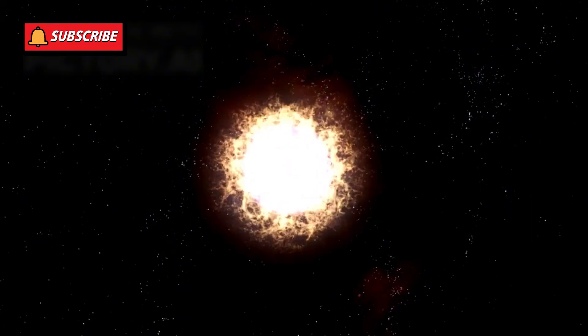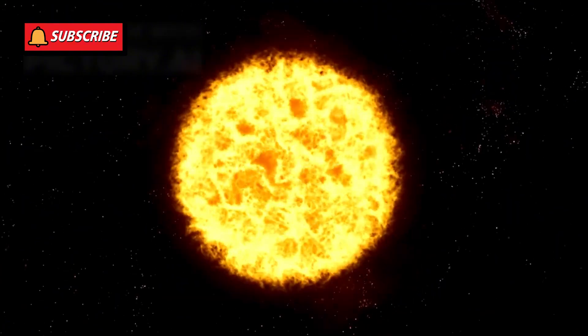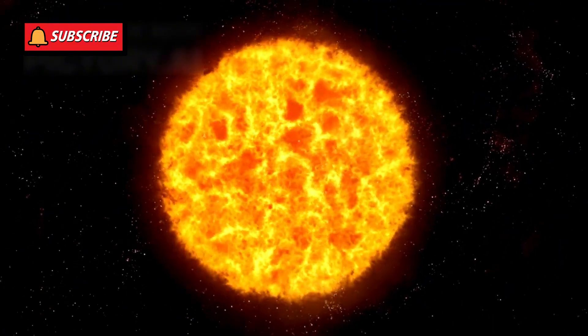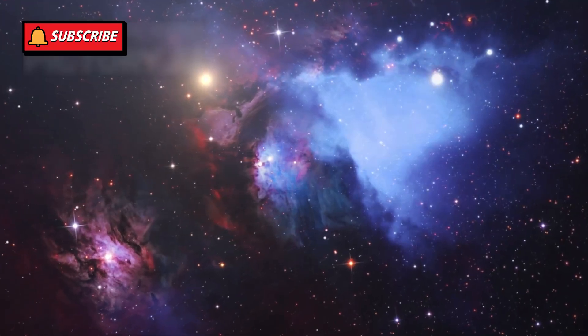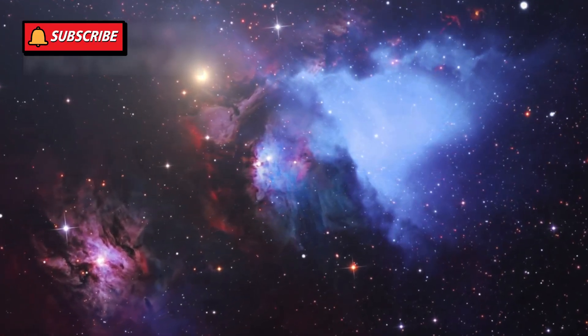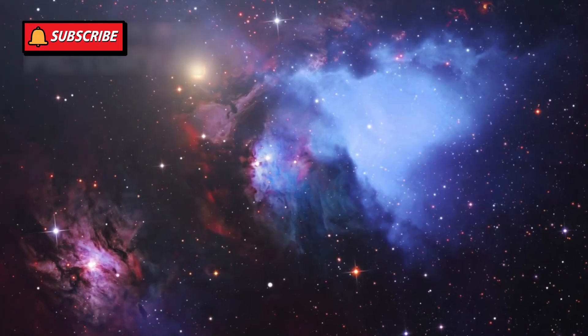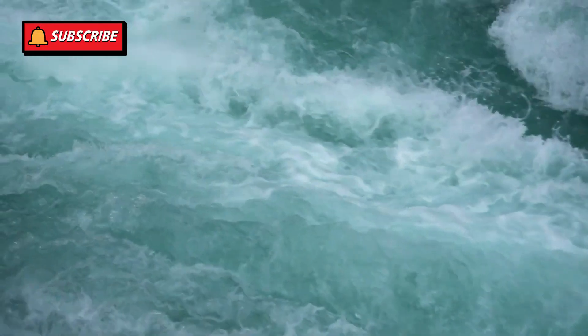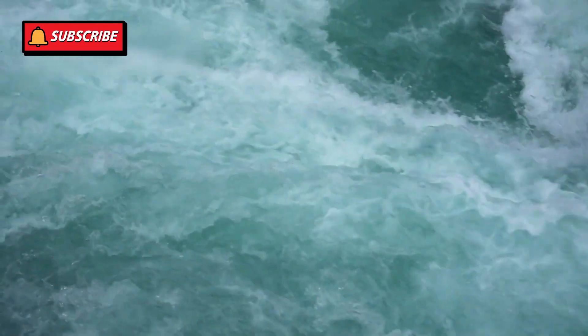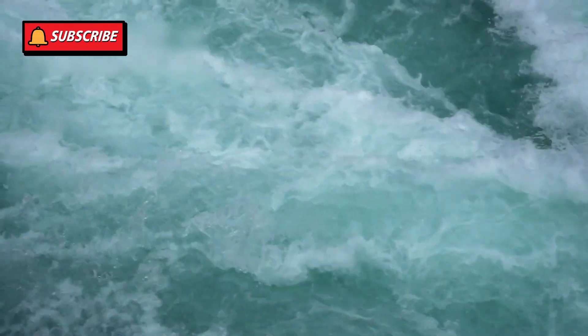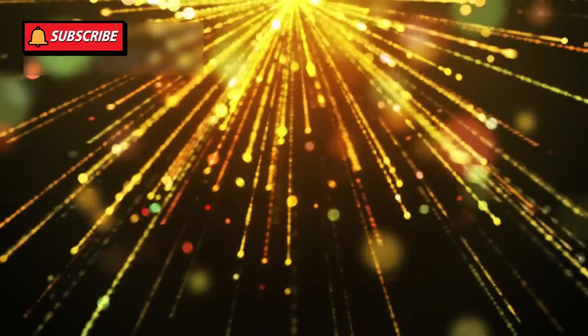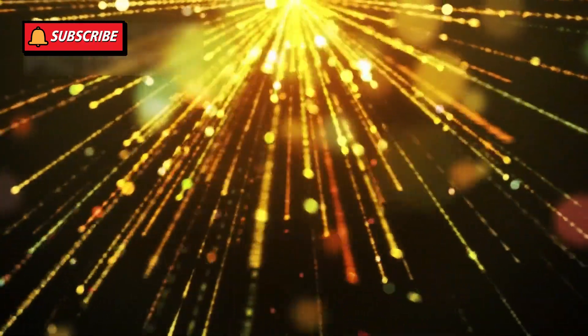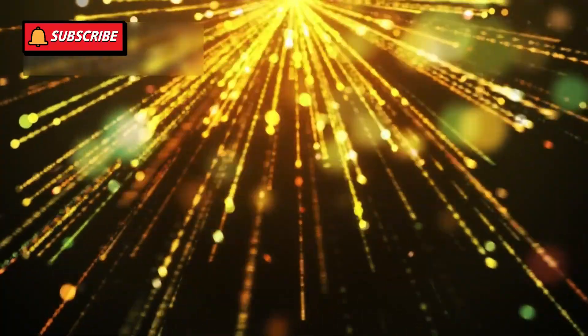Being a red supergiant, Betelgeuse has a massive and turbulent outer layer. Observations from NASA's Hubble Space Telescope and other ground-based instruments have shown huge gas bubbles moving across its surface. These movements look like giant waves and have been compared to a boiling pot of soup, with gas rising and falling chaotically.